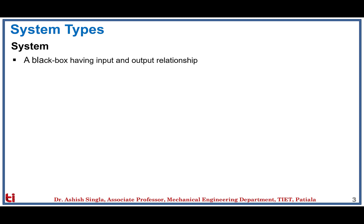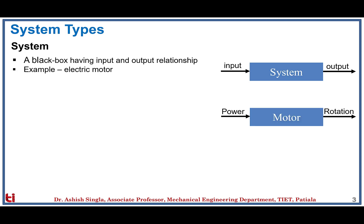From the mechatronics point of view, the system is considered as a black box where there is some input and some output coming out of the system. We are concerned with the relationship between output and input — what is going on inside the system we are not bothered about, similar to the case of a transfer function. As an example, we take an electric motor where power is given as the input and rotation of the shaft is taken as the output.